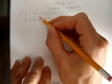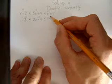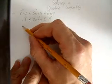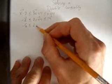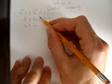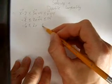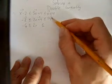And to do that, we first take away the 4 on all three parts. Negative 2 minus 4 is negative 6, plus 4 minus 4 just leaves 0, and 14 minus 4 is 10.